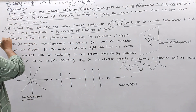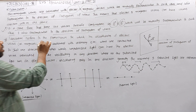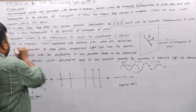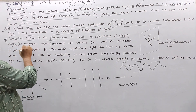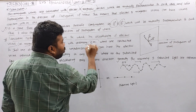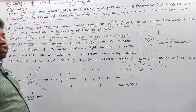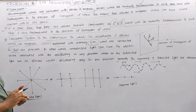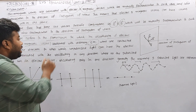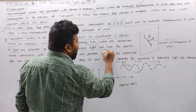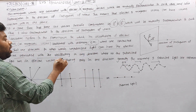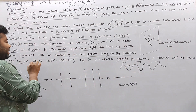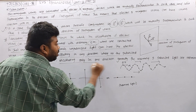So, polarization refers to the phenomenon in which the oscillation of the electric vector or magnetic vector associated with an ordinary electromagnetic wave are restricted in just one direction. In other words, unpolarized light can have the electric vector oscillating in any direction, whereas polarized light has its electric vector oscillating along one direction only.